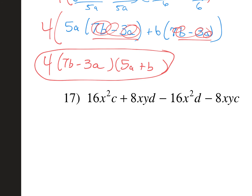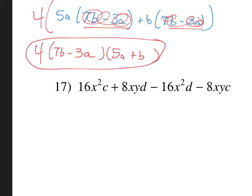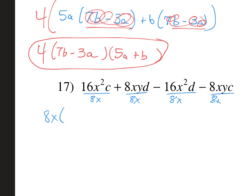Ask yourself: is there a GCF? Yes — 8 and x both go into all four terms, so take out 8x and divide everything. 16 divided by 8 is 2, x squared divided by x is x, leaving xc. Plus: 8 divided by 8 is 1, x divided by x is 1, leaving yd. Minus: 16 divided by 8 is 2, x squared divided by x is x, leaving d. Then negative 8 divided by 8 is negative 1, x divided by x is 1, leaving yc.